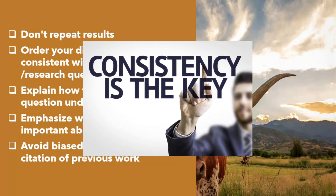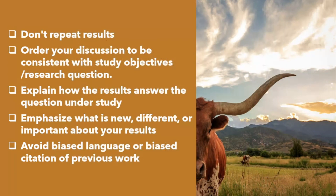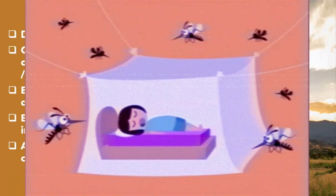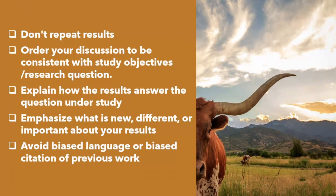Another important guideline is that you must order your discussion to be consistent with your study objectives or research questions. For instance, if your first objective is on the prevalence of malaria and your second is on the perception of people regarding mosquito net use, then your discussion should first address demographics, then prevalence, then perception — in that order — so that any reader can follow through.